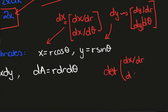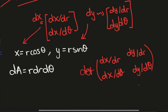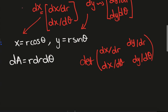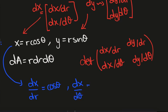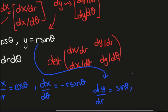The matrix entries are: ∂x/∂r, ∂x/∂θ in the first row, and ∂y/∂r, ∂y/∂θ in the second row. This makes sense because you can think of it as an infinitesimal parallelogram, and the determinant gives you its area. Since x = r cos θ, ∂x/∂r = cos θ and ∂x/∂θ = −r sin θ. Since y = r sin θ, ∂y/∂r = sin θ and ∂y/∂θ = r cos θ.